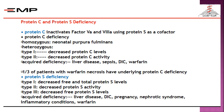Acquired protein S deficiency is also present in severe liver disease, disseminated intravascular coagulopathy, sometimes during pregnancy — which may predispose to thrombosis — nephrotic syndrome, inflammatory conditions, and during warfarin therapy. All these conditions cause acquired protein S and protein C deficiency.